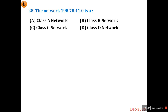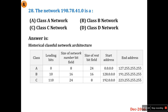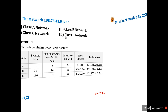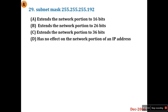Question number 28: The network 198.x.x.x — is it Class A, Class B, Class C, or Class D? This is a straightforward question. Class A is 0 to 127, Class B is 128 to 191, and Class C covers 192 to 223. Since 198 falls in the range 192–223, it is a Class C network. Option C is the right answer.